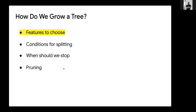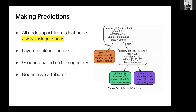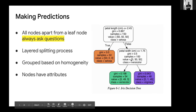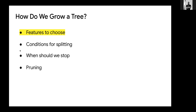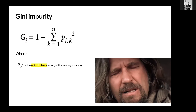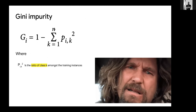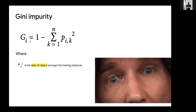The next slide: how do we grow a tree? If we have to create something like this, first we need to know the features to choose and the conditions needed for splitting, when we should stop, pruning, and Gini impurity.